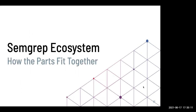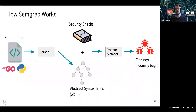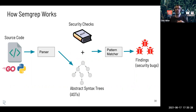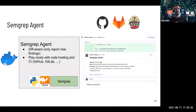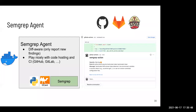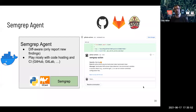How do all these things fit together? SEMGREP works like most other static analysis tools: you go from source code, parse it into an abstract syntax tree — a graph structure — combine your security checks, do some pattern matching, and out come security bugs. We also have a Docker container called SEMGREP Agent, also on GitHub and free. If you want to run SEMGREP CLI in continuous integration, you probably want it to be diff-aware and able to write merge request or PR comments — this just makes that easy.